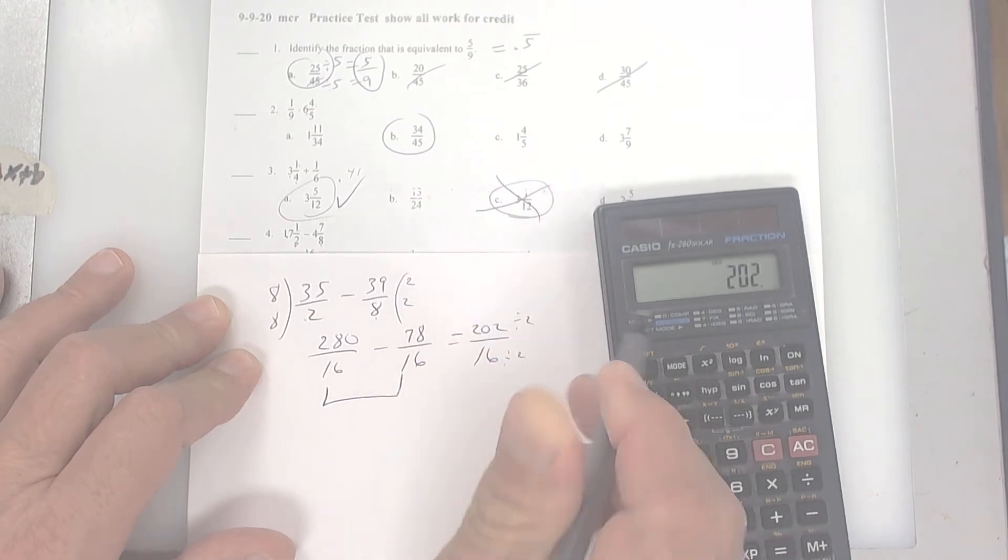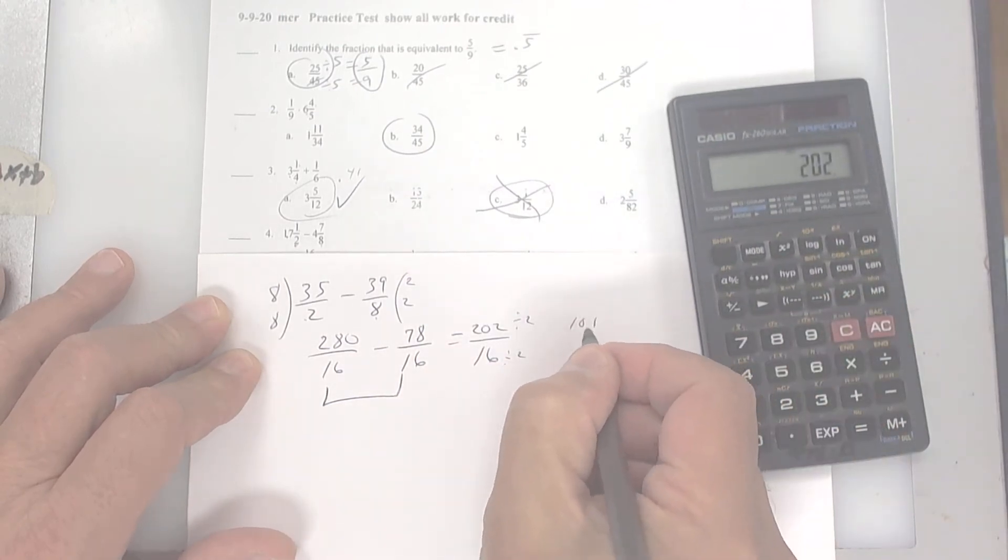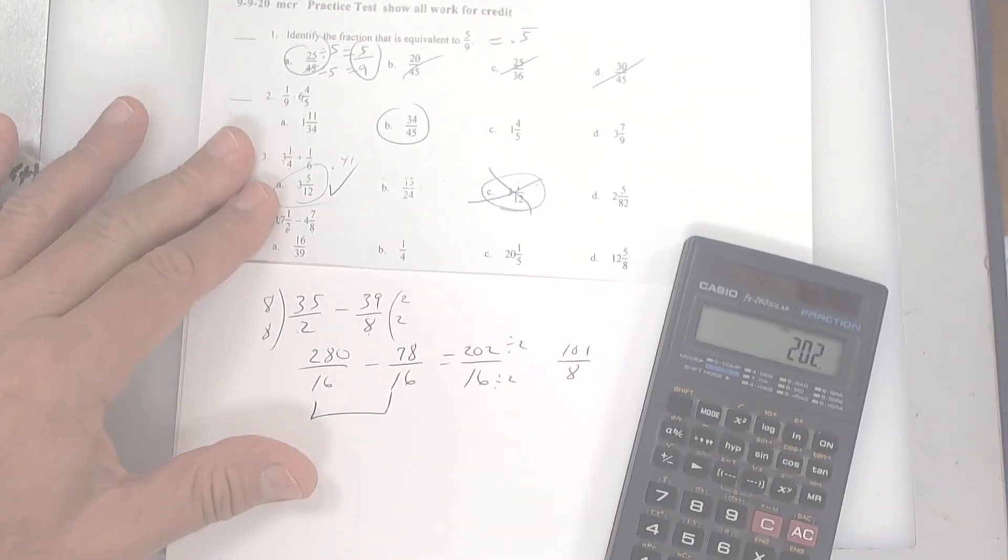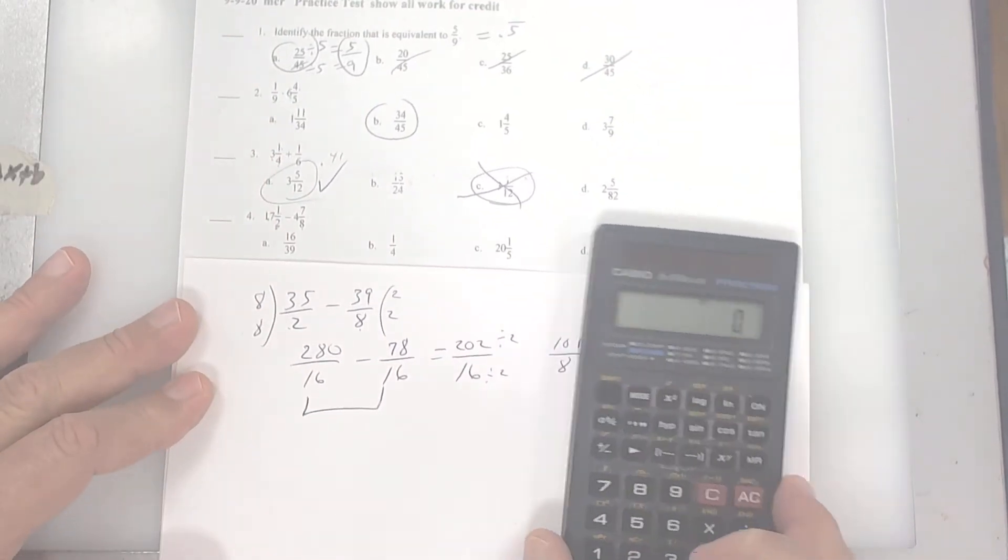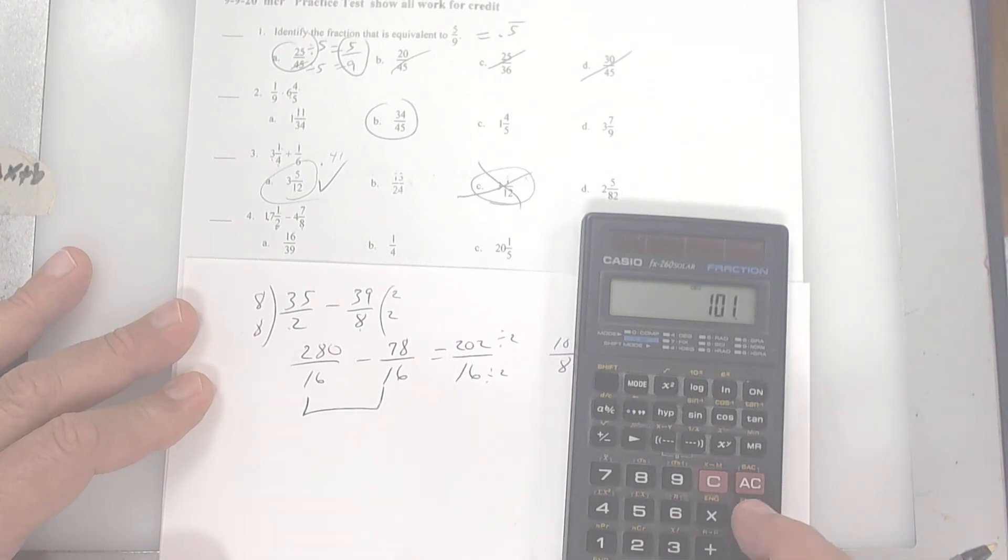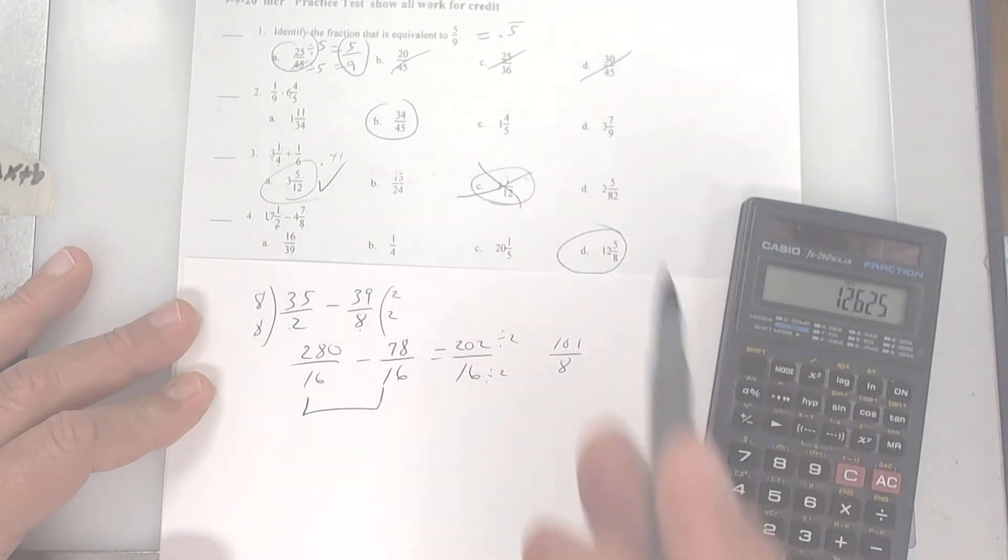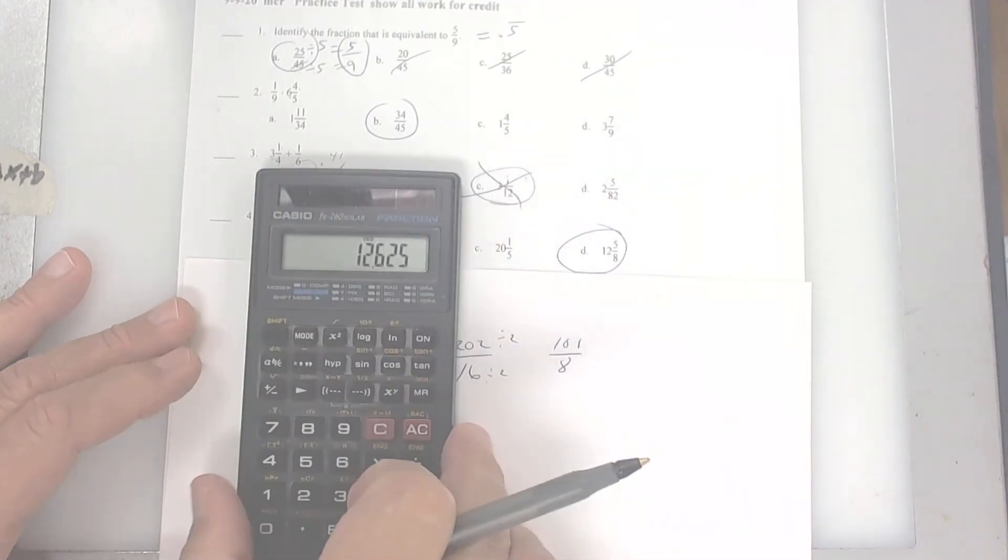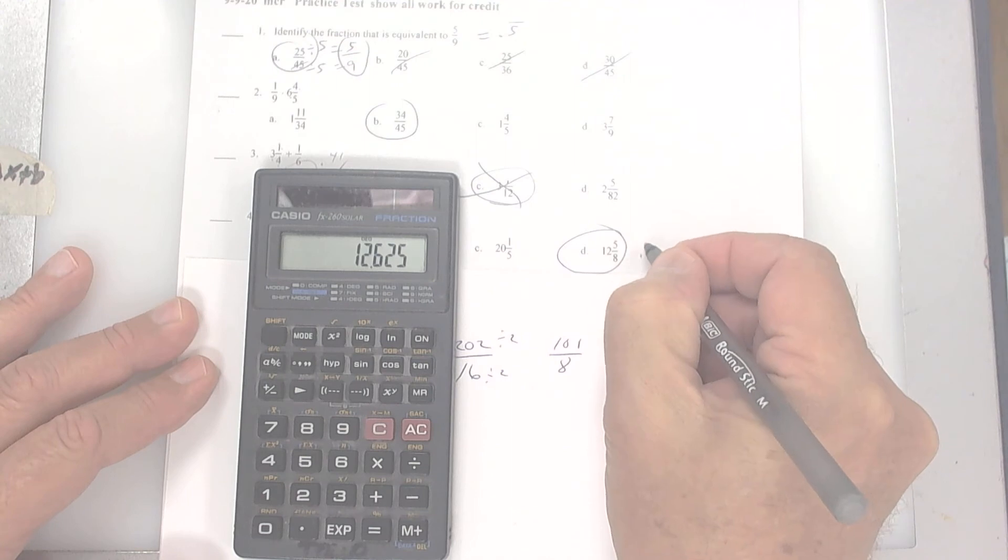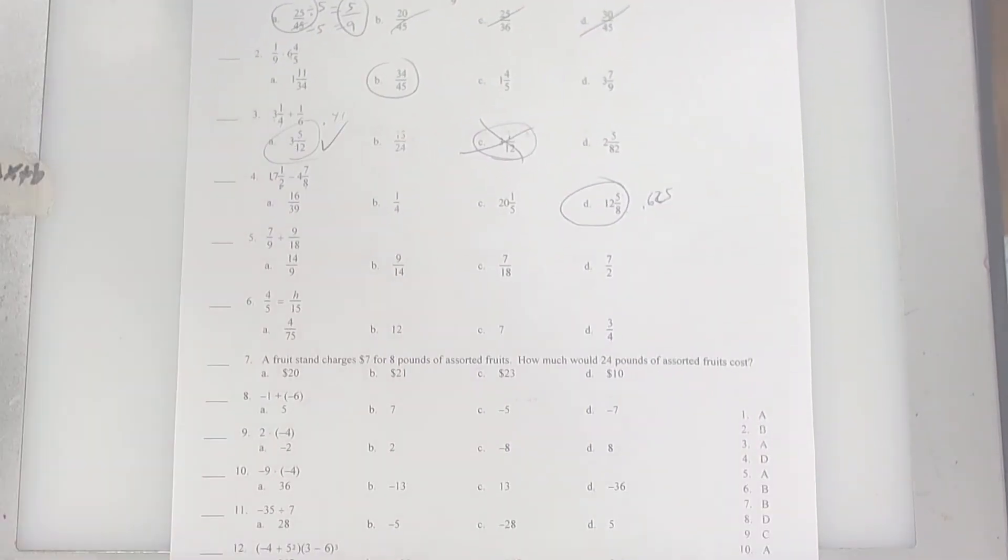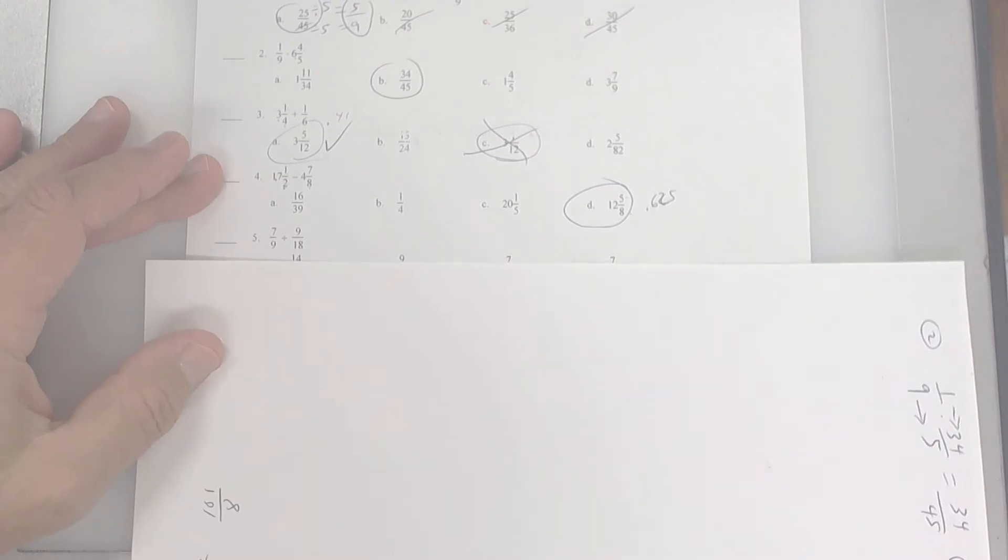So I get 202 over 16. I divide by 2. And I get 101 over 8. Now let's take a look at the answer choices. So clear it out. Press 101 divided by 8. Let's see what that is. I get 12 and some change. It's got to be this one. You can check it. This is 0.625. So take 5, divide it by 8. And you should get 0.625. And you do. All right. Let's keep moving.